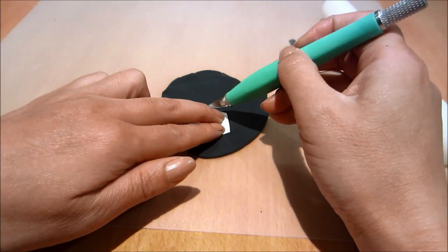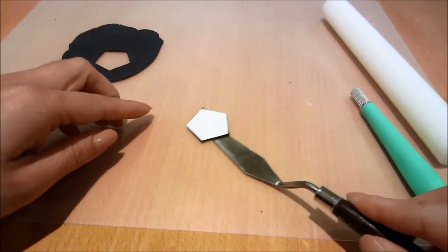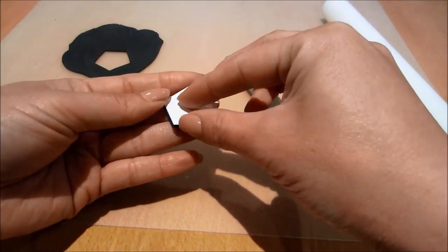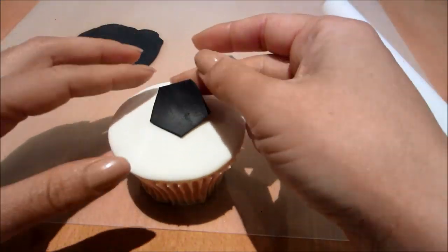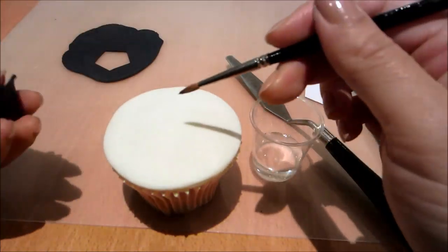Now onto some black fondant. I'm using a little template in the shape of a pentagon. I've just traced that from an image from my computer and I've cut it out on paper as a template. Now I'm going to glue that in the middle of my cupcake.